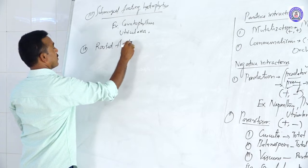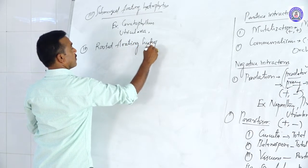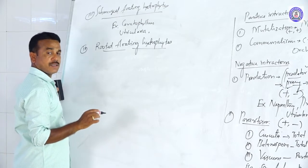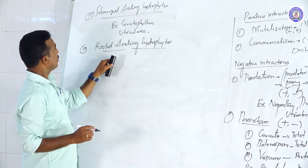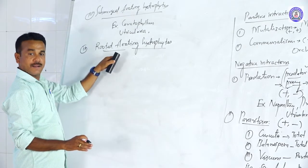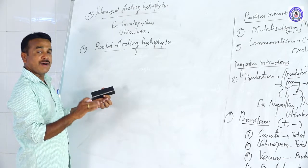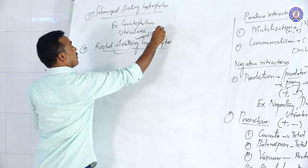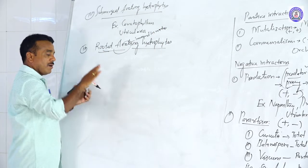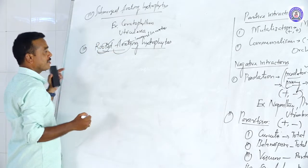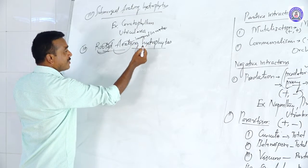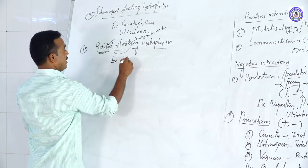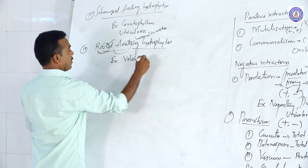Fourth type: rooted immersed hydrophytes (rooted floating). The roots are attached in the mud, but the leaves and flowers are immersed in the water. Examples include Vallisneria and Hydrilla.